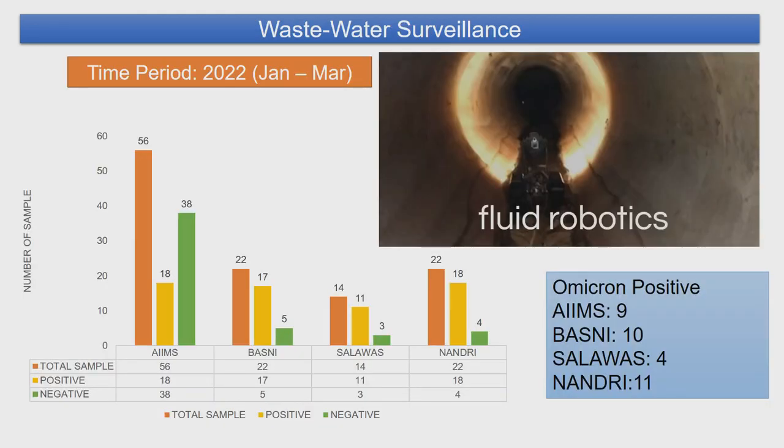For wastewater surveillance, we have a local project with Fluid Robotics, where a robot goes into sewage canals to collect samples. Samples have been collected from AIIMS, Basani, Salavas, and Andri areas. We could detect COVID-19 positivity in the samples and have also detected Omicron in these positive samples from January to March of this year.